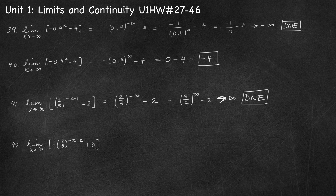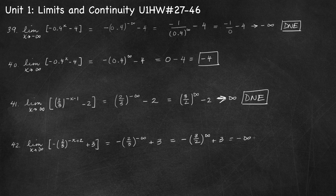Number 42, limit as x approaches infinity of negative 2 thirds to the negative x plus 2 plus 3. Substituting: negative 2 thirds to the negative infinity plus 2, and negative infinity plus 2 is still negative infinity. Rewriting as negative 3 over 2 to the power infinity plus 3. Since 3 over 2 is greater than 1, this grows infinitely large — so we have negative infinity plus 3, which is still negative infinity. The limit does not exist.